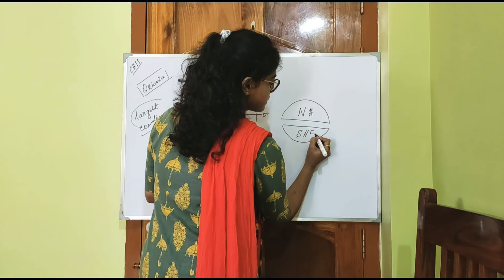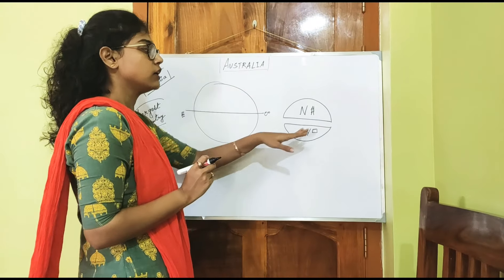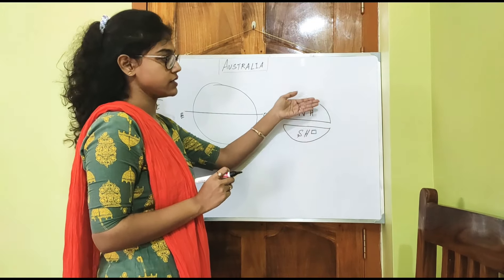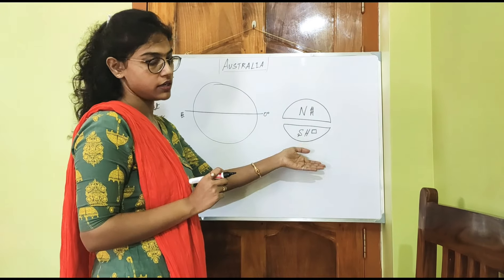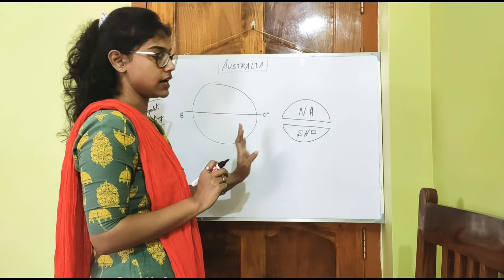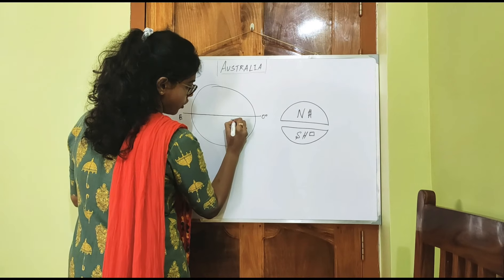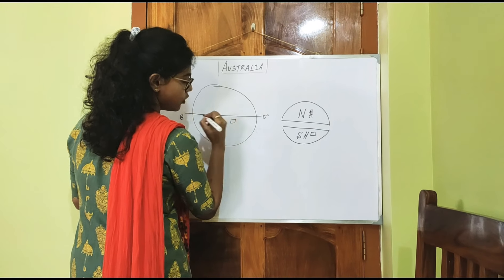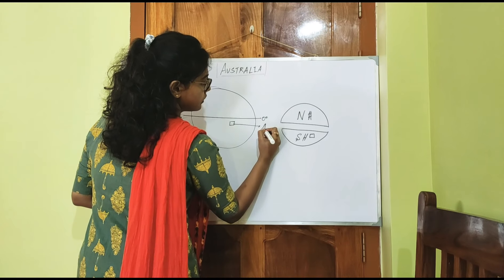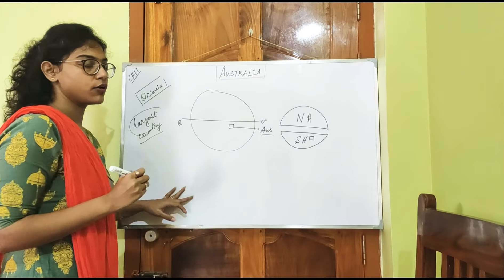Australia is fully located in the Southern Hemisphere — the full part is in the Southern Hemisphere, nothing is in the Northern Hemisphere. If I draw it here, you can see where Australia is locating.